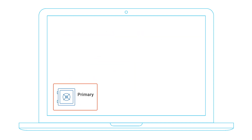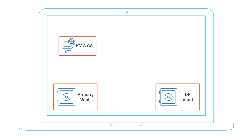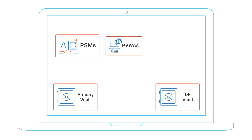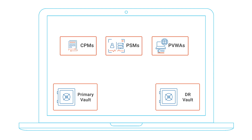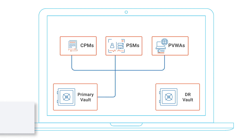A standard CyberArk PAM architecture consists of a primary vault and a disaster recovery vault. The PVWAs, PSMs, and CPMs, which we refer to as the components, communicate with the primary vault.